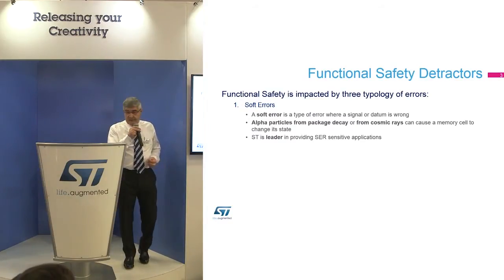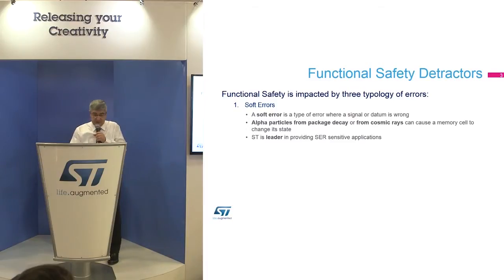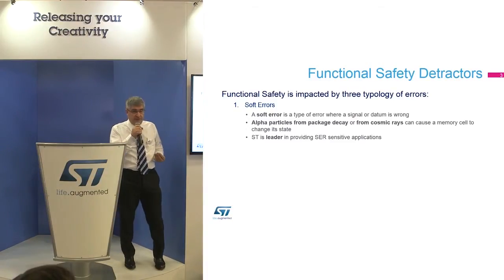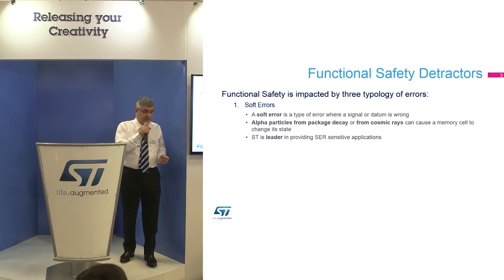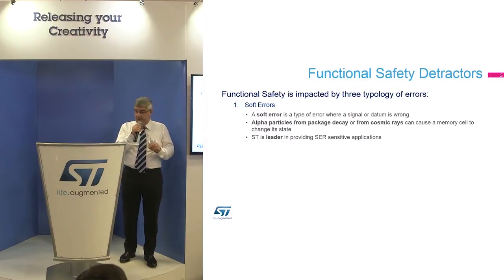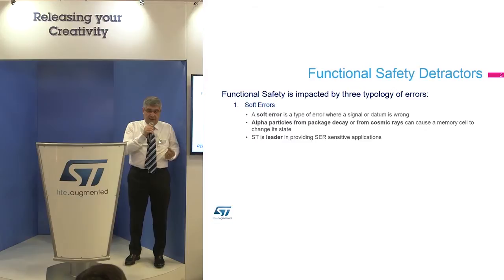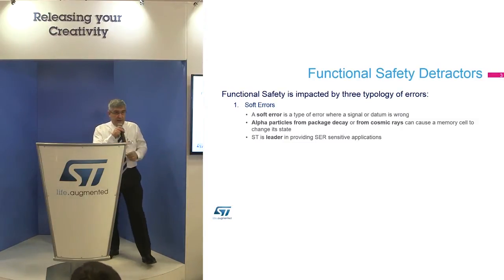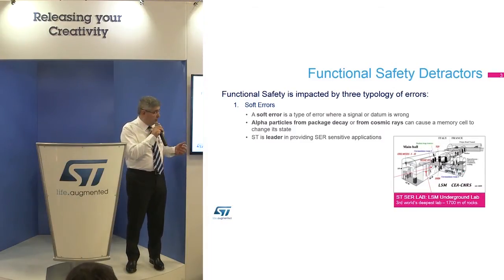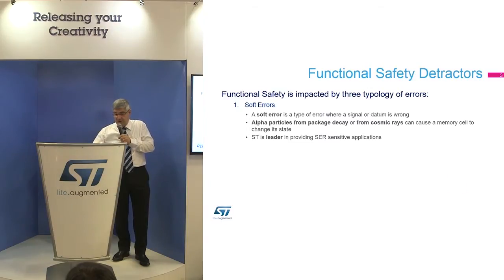We have three main elements that are safety detractors: soft errors, latent errors, and common errors. A soft error is an error where a single bit value is wrong. Typically it is related to memory units and these are generated by radiation caused by package decay that produces alpha particles that affect the silicon, and another possibility is cosmic rays. This can cause the change of status of a single bit, which can be a flip-flop, flash, or RAM memory cell. We have very good experience on this because we are part of a laboratory we have in the Alps, between France and Italy at 1,700 meters, where we have been working to examine the effect of these soft errors.